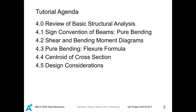First, we will do some review of basic structural analysis which is taught in McCann 2020 Statics and Dynamics. We will talk about the sign convention of beams under pure bending, as well as the technique of how to draw the shear and bending moment diagrams. We will introduce the most important topic of this chapter, which is the flexure formula under pure bending. We will also talk about how to find the centroid of a cross-section by using the first moment of inertia concept, and introduce design considerations.